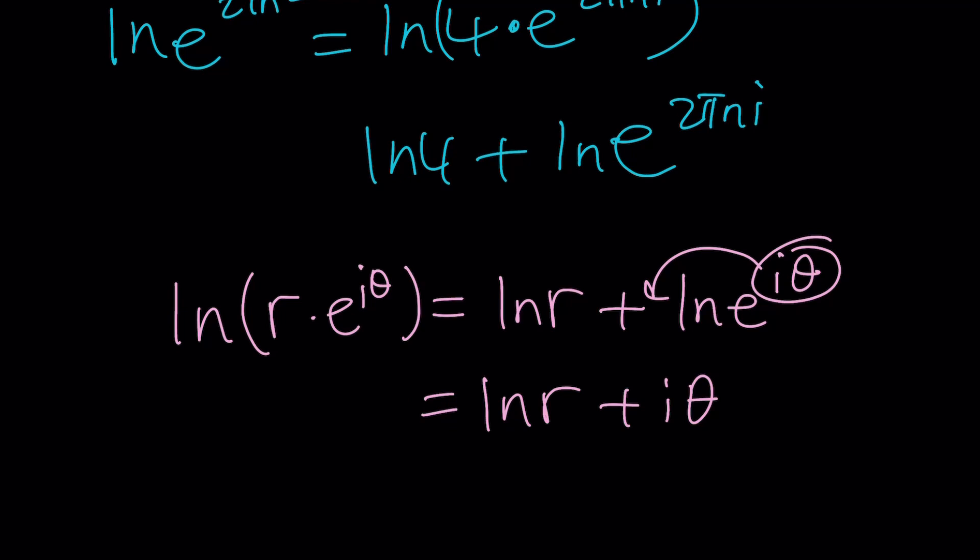And obviously, there are multiple values for theta because you can always add multiples of 2 pi. So r is real here. So this is the real logarithm.